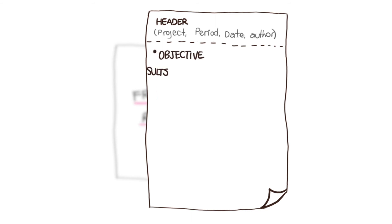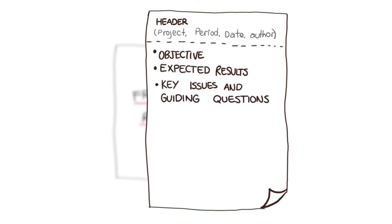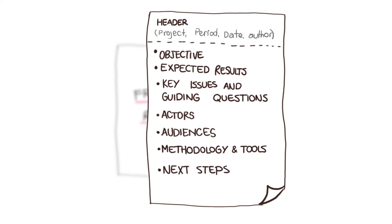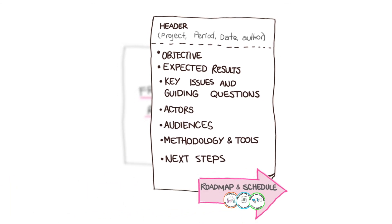Objective. Expected results. Key issues and guiding questions. Stakeholders who should participate in the learning process. Audiences for the learning process results. Methodology and tools. Next steps: the roadmap and timetable for phases 2, 3 and 4, with clear tasks and the responsible parties.